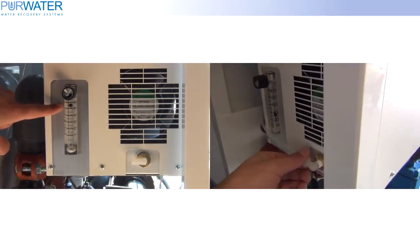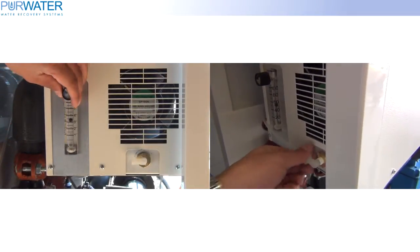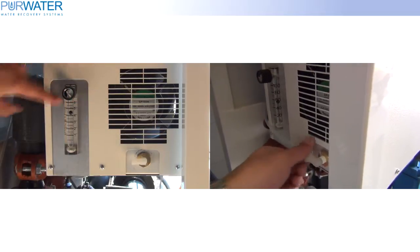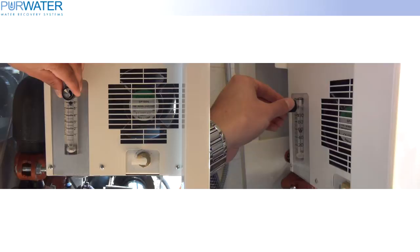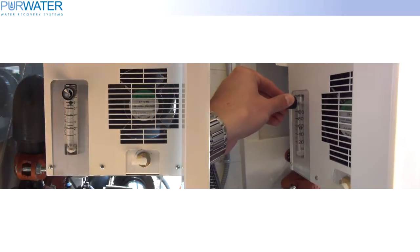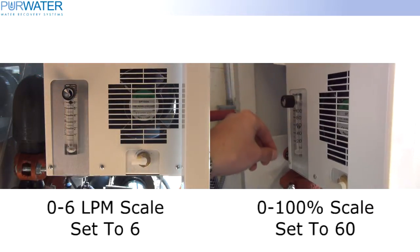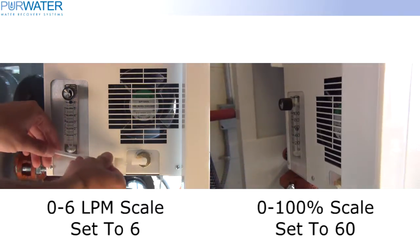On the left side of the machine, with the tube disconnected, the flow meter ball should be set at 6. If you have a unit that has a scale of 0 to 100, the ball should be set to 60.